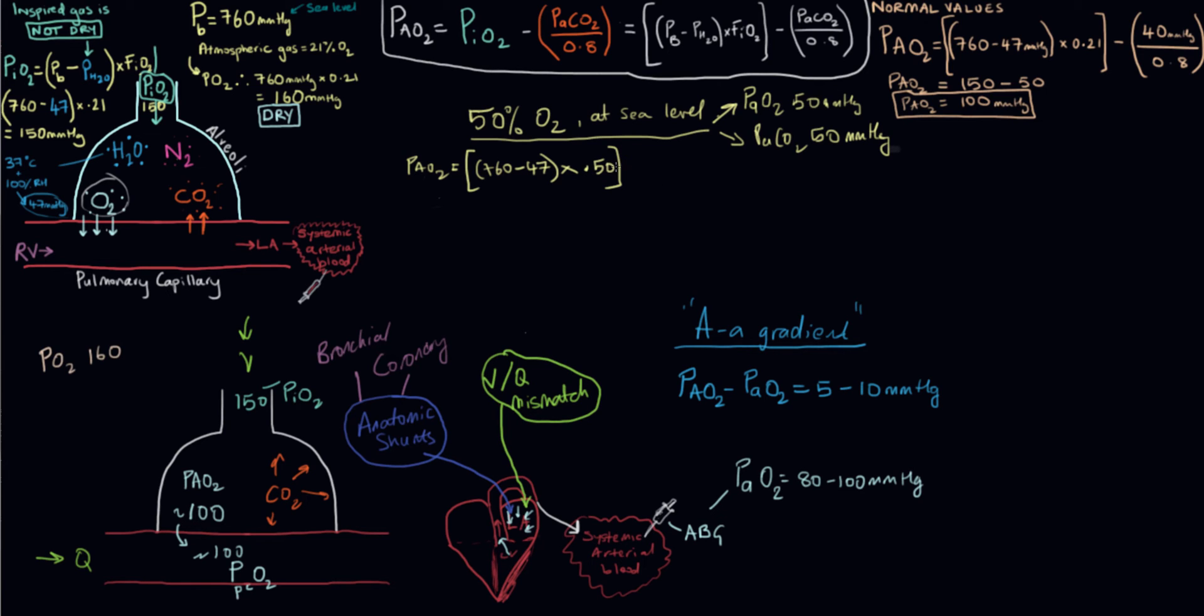Then we're going to factor in our alveolar CO2 partial pressure. We do that by taking our arterial CO2, 50, and dividing it by our respiratory quotient of 0.8. That's going to give us 356.5. That would be our PiO2. Then we're going to minus our alveolar CO2, which is 50 divided by 0.8, which is 62.5.